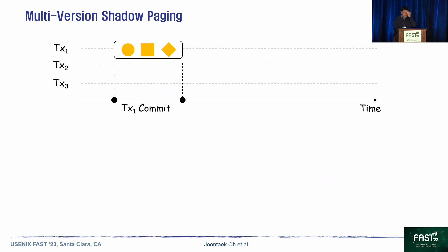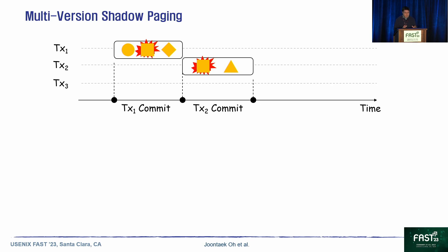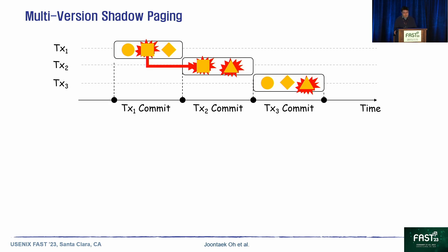Even so, since the transaction commit is separated into two pipelined parts, there is still a problem: transactions must be isolated. If transactions conflict with each other, they cannot be committed concurrently. Here, TS1 is being committed and TS2 commit is called. TS1 and TS2 have the same page — the square page — so commits of TS1 and TS2 are serialized due to the transaction conflict. After TS1's commit, the square page is inserted into TS2 and TS2's commit starts. Likewise, TS2 and TS3 share the triangle page, so they are serialized, and the triangle page is inserted into TS3 after the commit of TS2.